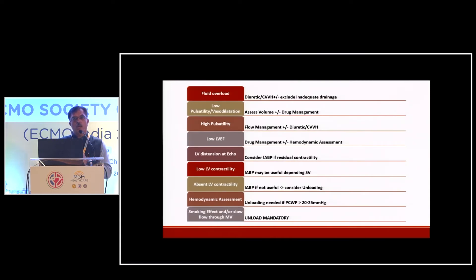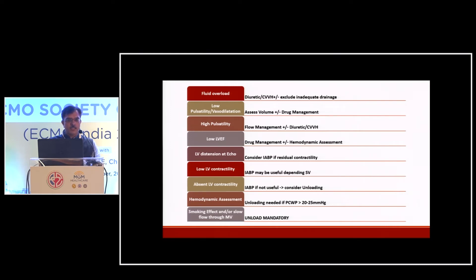In any VA ECMO, we need to monitor certain things: serial echocardiography — transthoracic or transesophageal; a Swan-Ganz catheter monitoring right-sided pressures; right upper limb pressure; and oxygen saturation — all of which are very important.